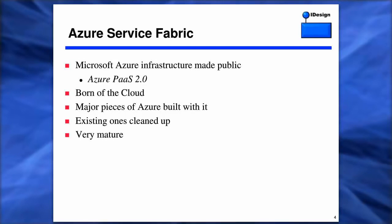In a nutshell, the fabric is basically Azure infrastructure made public. It's what Microsoft is calling Azure Path 2.0. It's very mature. There are already major pieces of Azure built on top of it — many existing ones cleaned up — and it's been born of a cloud so that it actually supports the future needs.